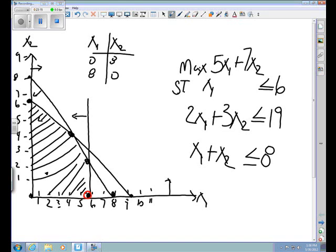We know the profit down there would be 5 times 6 plus 7 times 0, or 30. So we know automatically that this solution up here on the vertical axis is superior to this one down here.